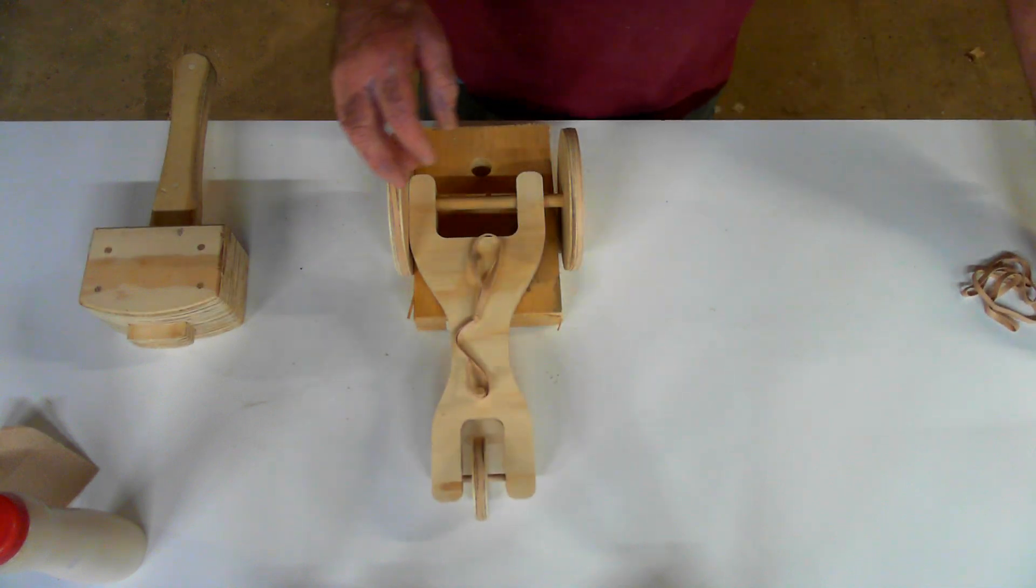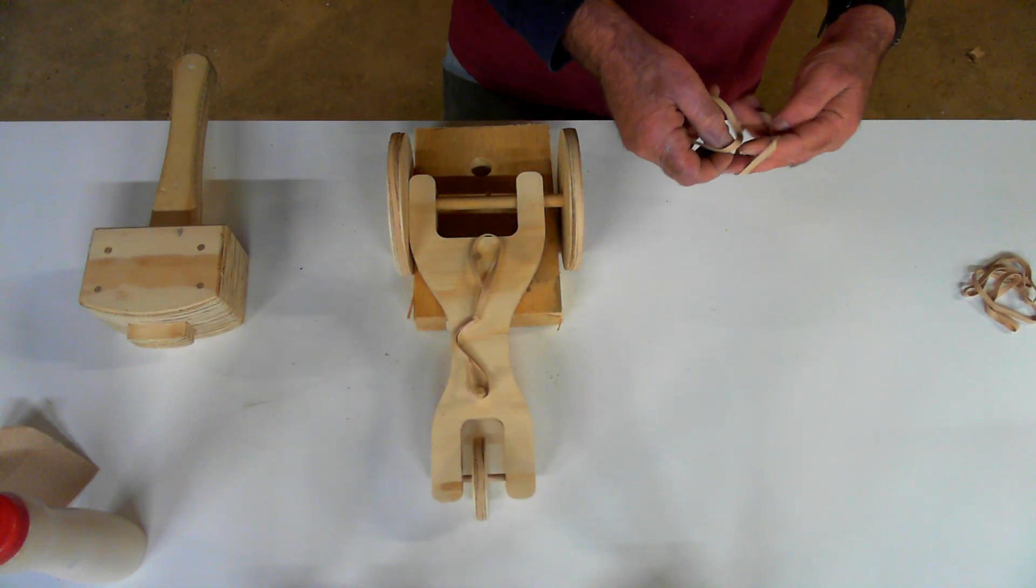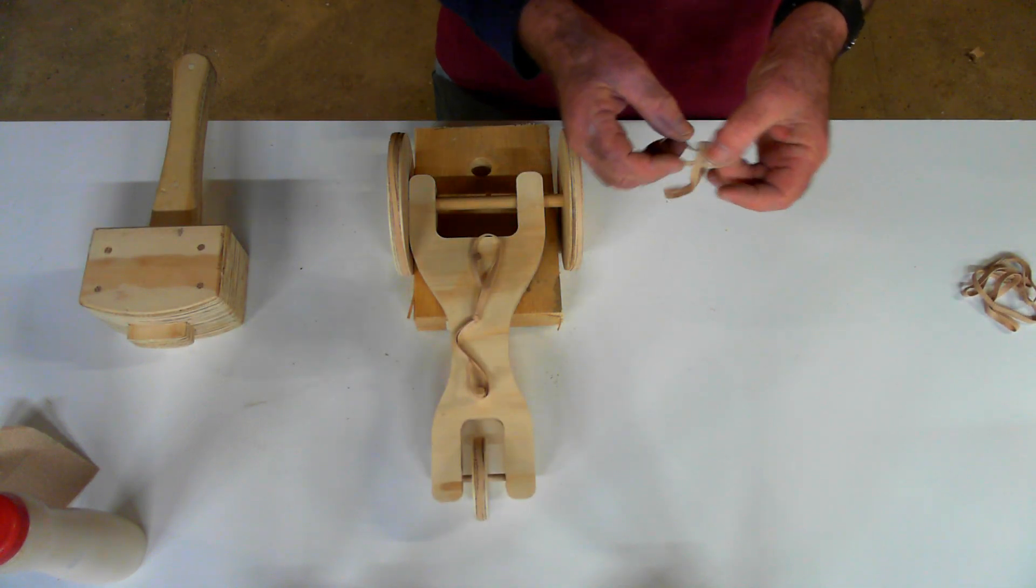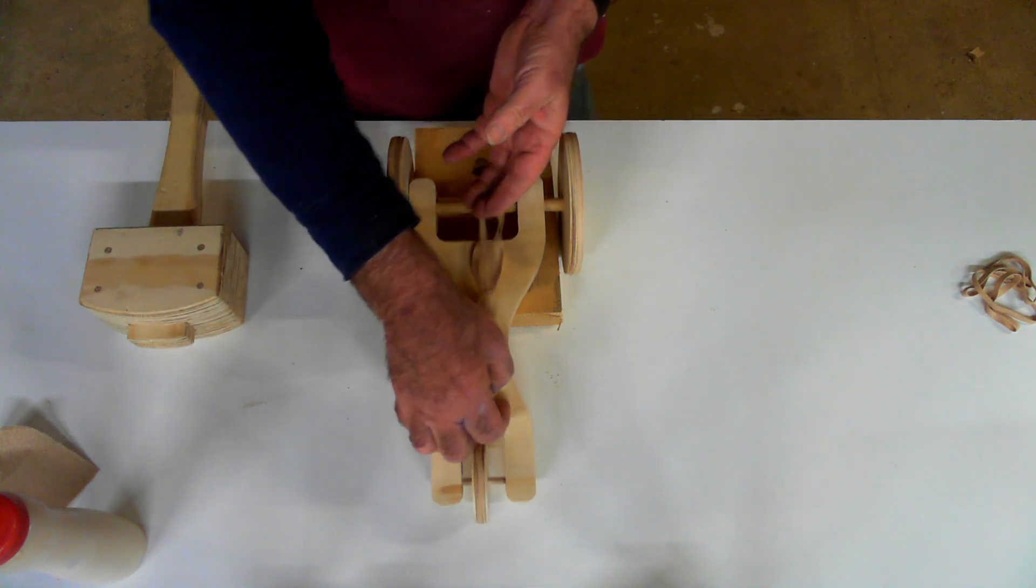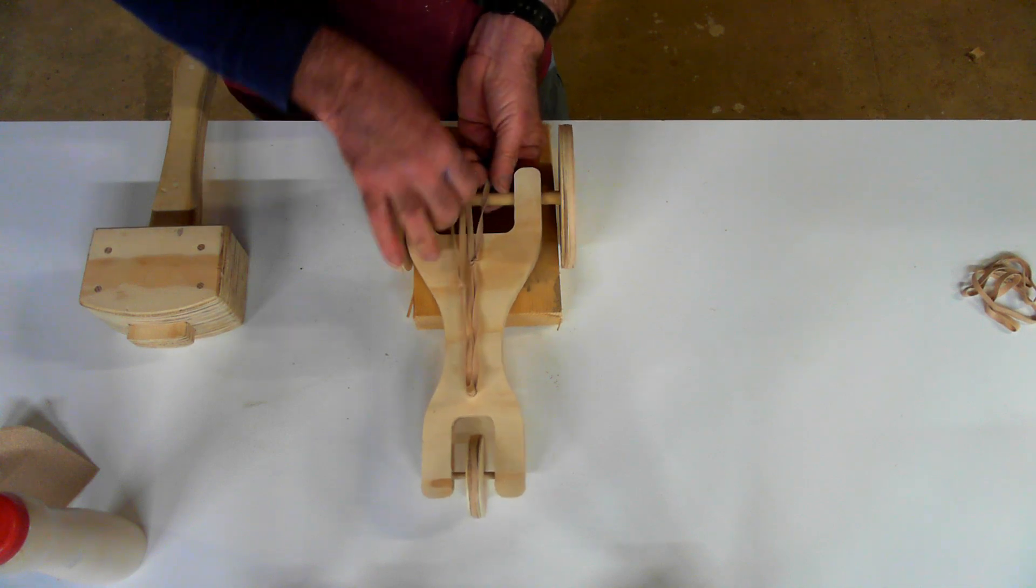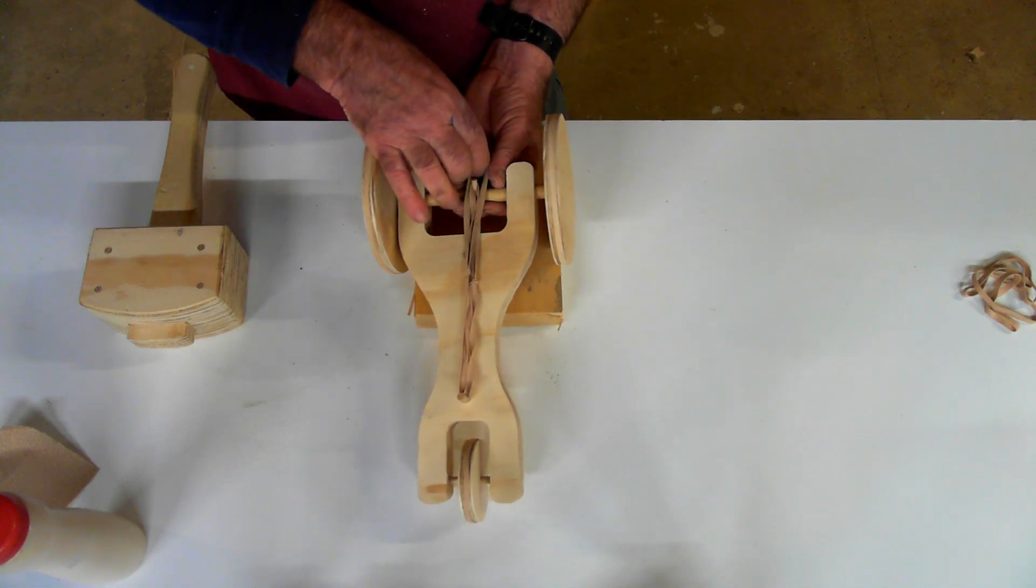If you really want to have some extra power, take two more rubber bands, link them together, exactly like the first one. Hook them on. And you've got two engines now.